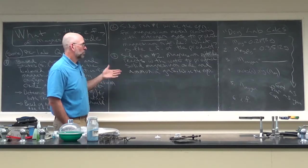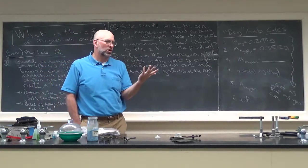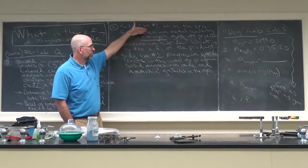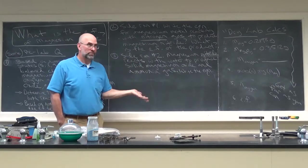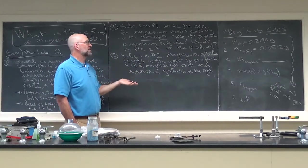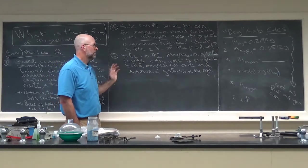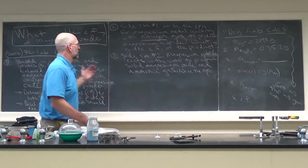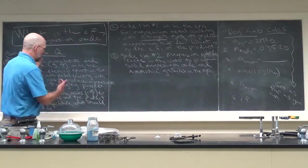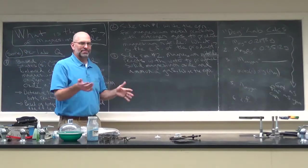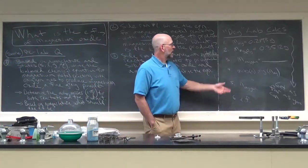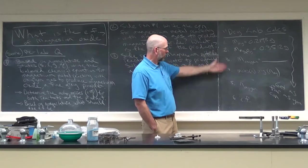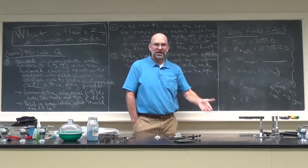Side reaction number three - which we're not going to pay attention to, but it technically occurs because there's water in the air - magnesium nitride reacts with water to produce solid magnesium oxide and ammonia gas. Write the balanced chemical equation for reactions one, two, and three, but you only have to find the molar masses for number one. Over here I have a set of dry lab calculations. These mirror steps one through six in the calculation section in the lab.